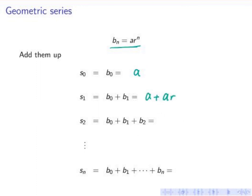S_2 is b_0 plus b_1 plus b_2, so this is a plus ar plus ar squared. And then S_n is a plus ar plus and so on plus ar to the n. So S_n is the sum of the first n elements of the geometric sequence.